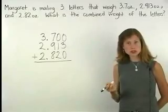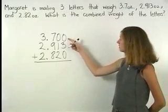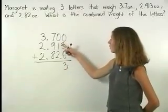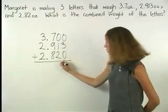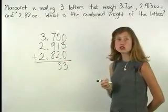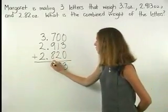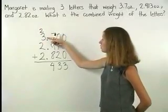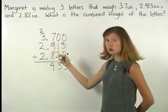Now we add in each column starting on the right. 0 plus 3 plus 0 is 3. 0 plus 1 plus 2 is 3. 7 plus 9 plus 8 is 24. So we write the 4 and carry the 2. 2 plus 3 plus 2 plus 2 is 9.